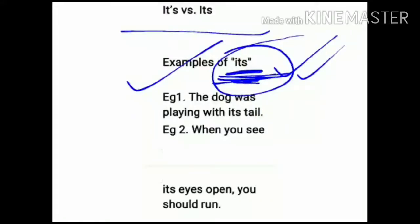Only S is added. Example: The dog was playing with its tail. Now see this it. Possession—the dog's tail. It's possessive form, so here its has no apostrophe.